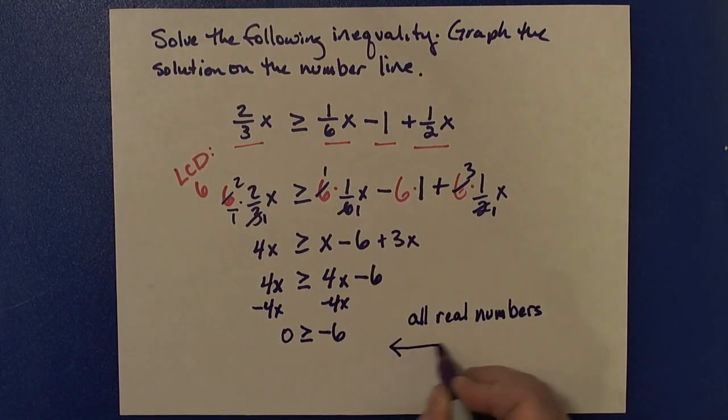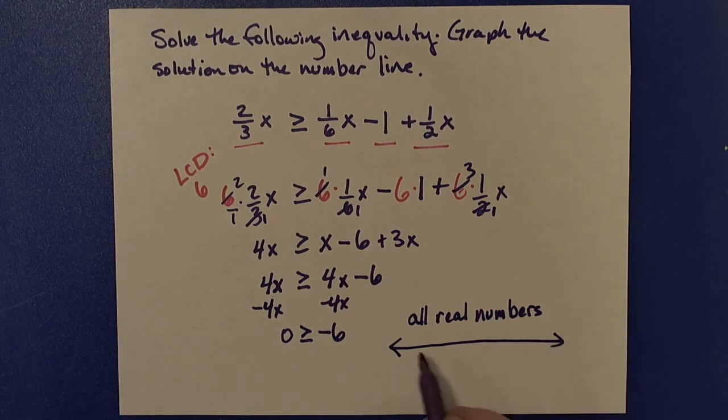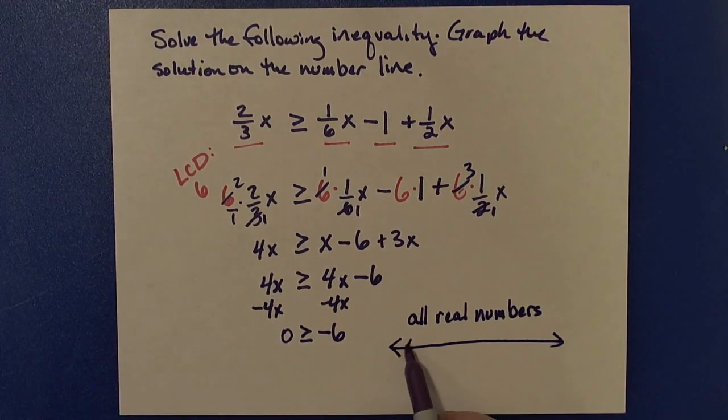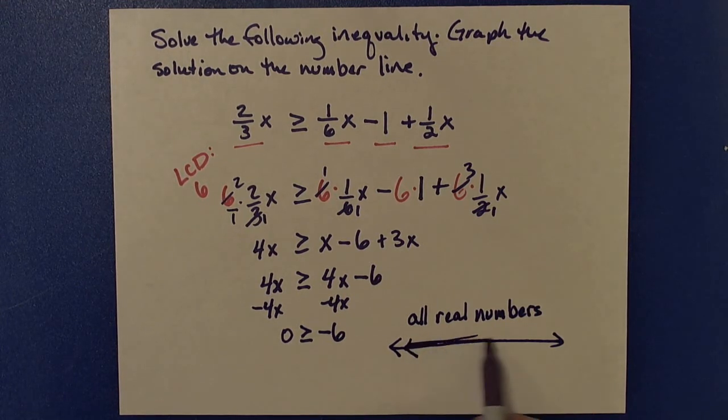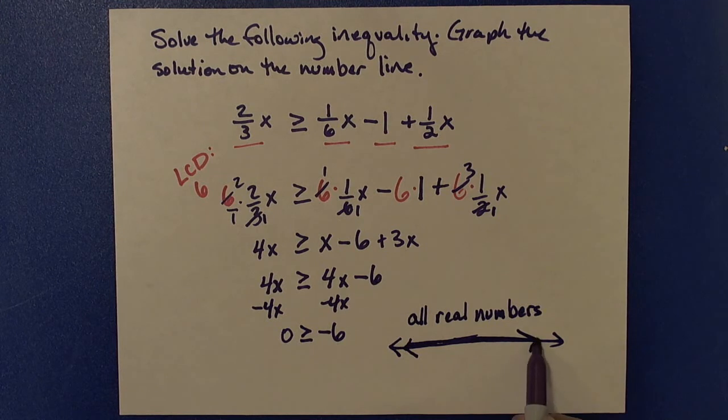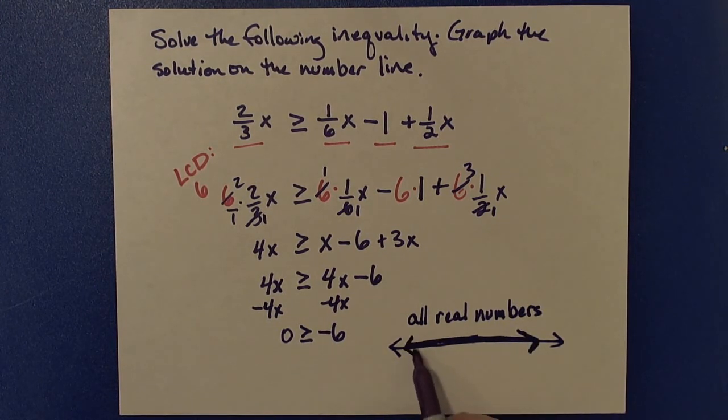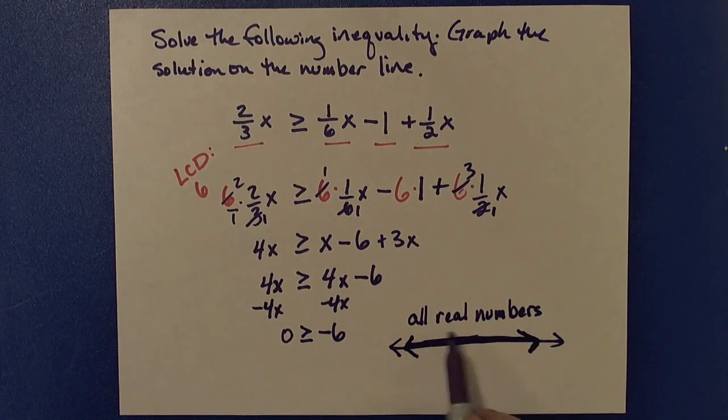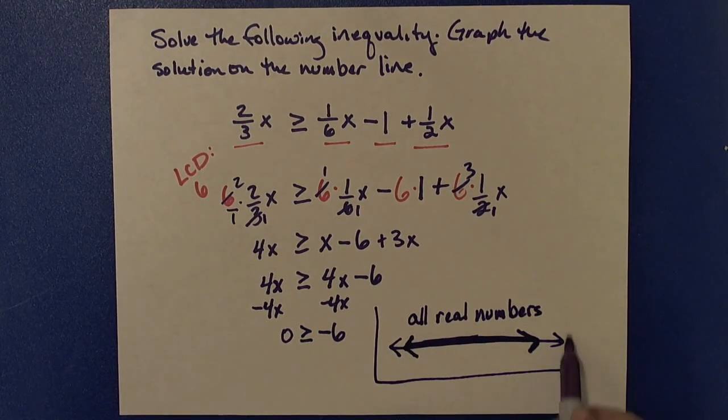And then to graph that, it will be a number line. And I want to show that I'm shading in the entire number line. So I might make just another arrow on top, darkening it in, to show that I've shaded in or indicated the entire number line, all real numbers. That's my solution.